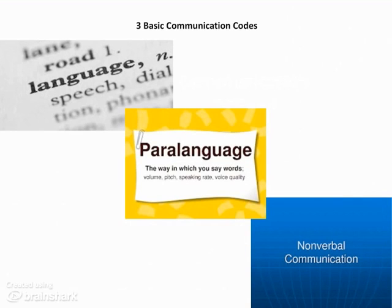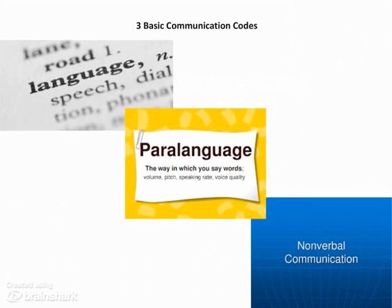The symbols that carry messages are communicated through codes. There are three basic communication codes: language, which is the verbal code and involves either spoken or written words; paralanguage, which is the vocal code and involves the vocal elements that go along with spoken language; and nonverbal, which is the visual code involving all intentional and unintentional means other than written or spoken words by which a person sends a message. The codes must be consistent for effective communication, and people tend to believe what they see over what they hear when conflicting messages occur, which is why nonverbal communication is so important.